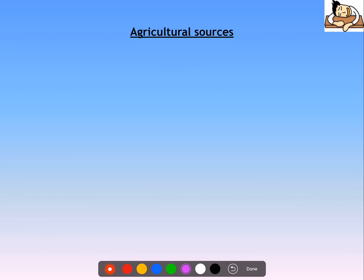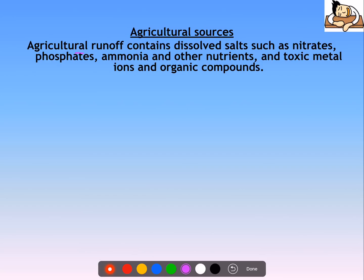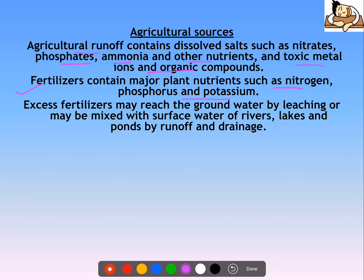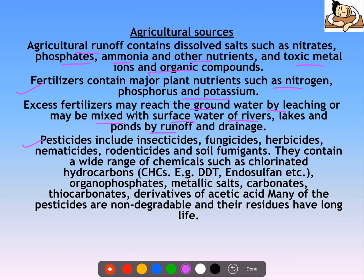Agricultural sources are another major cause. Agricultural runoff contains fertilizers — mainly nitrates, phosphates, ammonia, and other nutrients — as well as toxic metal ions and organic compounds. Fertilizers containing plant nutrients like NPK reach groundwater by leaching or mix with surface water of rivers and lakes by runoff. Agricultural runoff may also contain pesticides like insecticides, fungicides, herbicides, and soil fumigants, including chlorinated hydrocarbons like DDT and endosulfan. Most of them are non-degradable, have long life, and may cause bioaccumulation. When fertilizers reach water bodies, they cause eutrophication.